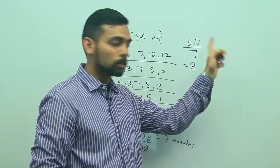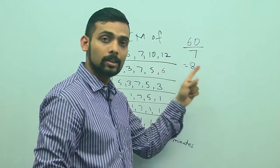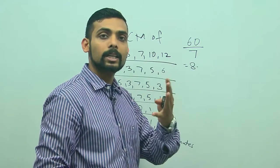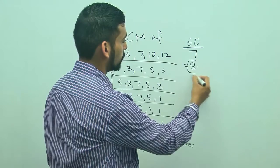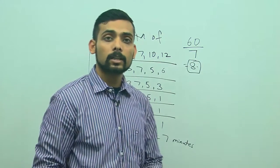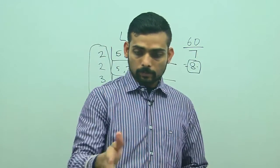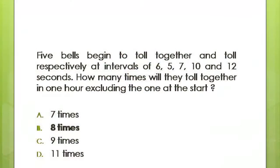So they will toll together after 7, 14, 21, 28, 35, 42, 49, 56 - so totally these bells will toll together 8 times during that 1 hour interval. So my correct option is going to be B, 8 times they will toll together.